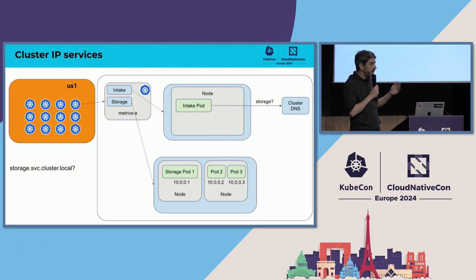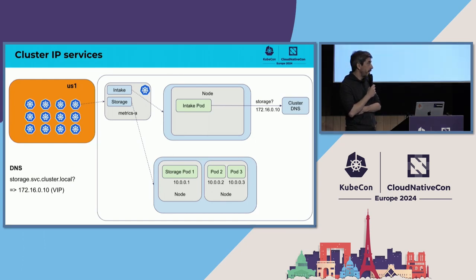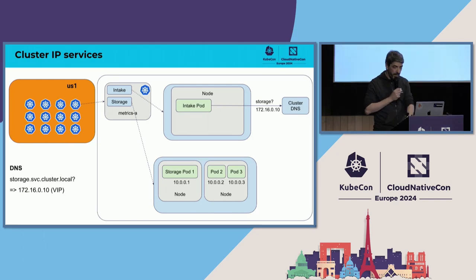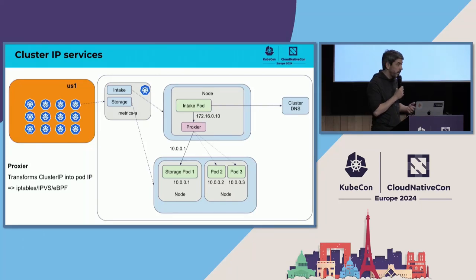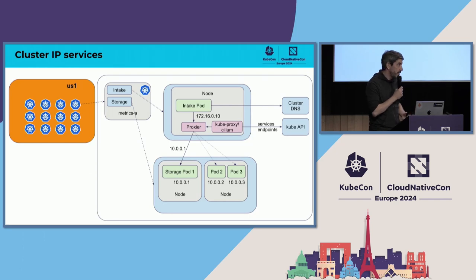The way cluster IP services work is as follows. If we have an intake pod that wants to reach the storage pod of the storage application, the intake pod is going to make a DNS query — here it's calling for storage. DNS is going to give back a cluster IP, which is actually a virtual IP. It's not the IP of one of the pods: pods have IPs in 10.something, while the virtual IP is in 172. The intake pod sends traffic to the virtual IP, which has to be translated into the IP of a pod by a proxier. This is done with iptables, IPVS, or increasingly eBPF. The classic component for this was kubeproxy, and more and more people use Cilium — which is what we do.